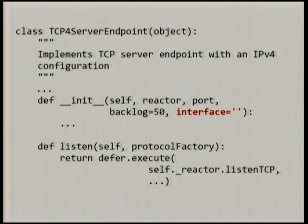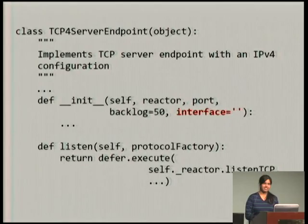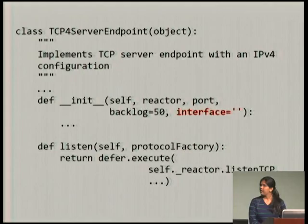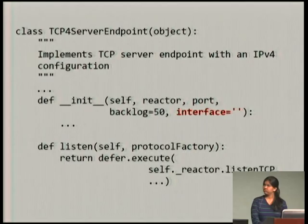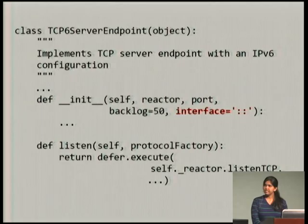My first task was — and you need to know that when I started out, I didn't know what Twisted was, or what networking was, or what sockets are, or basically anything at all. Fortunately, my first task didn't need me to know any of these things. We already had this endpoint working with IPv4 connections, and I needed to create one that could work with IPv6 connections. It was just a change in a default value and probably a few minor tweaks in the unit test. So it was easy — I was happy and everything was going well.